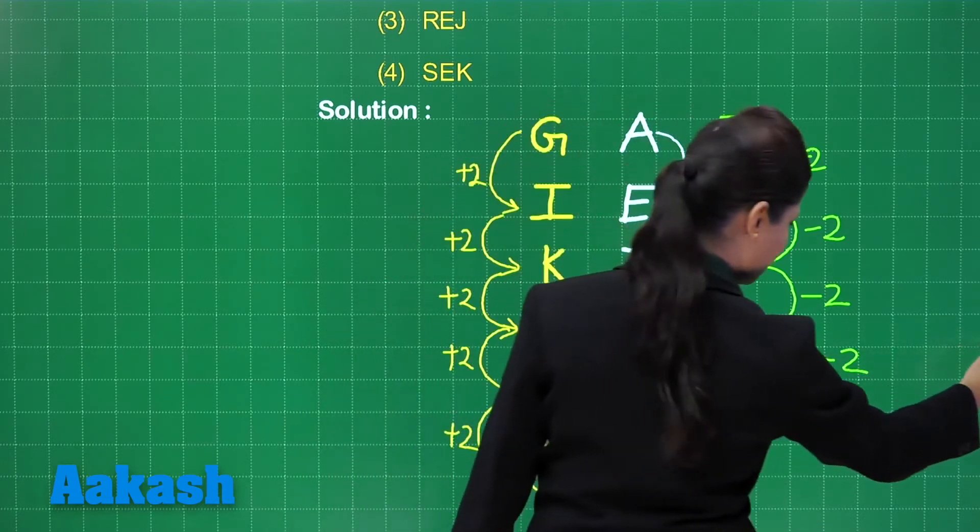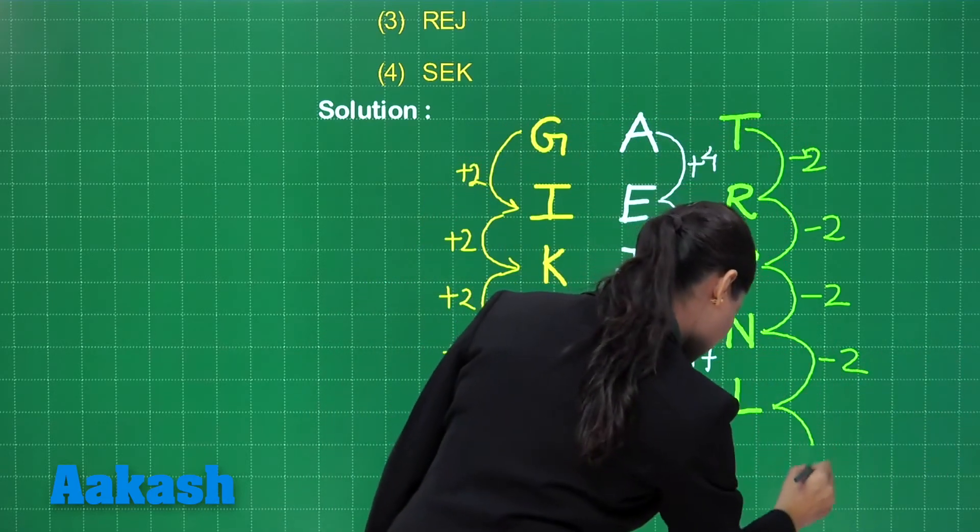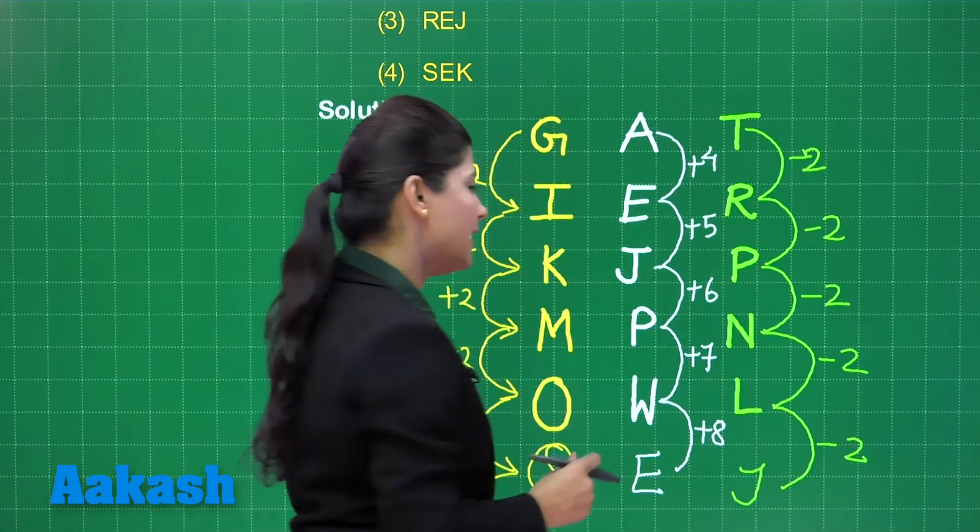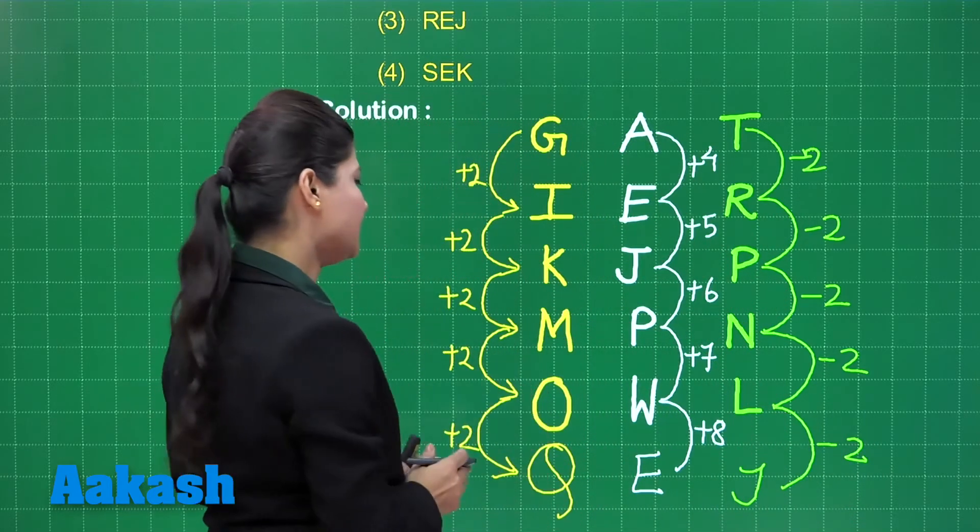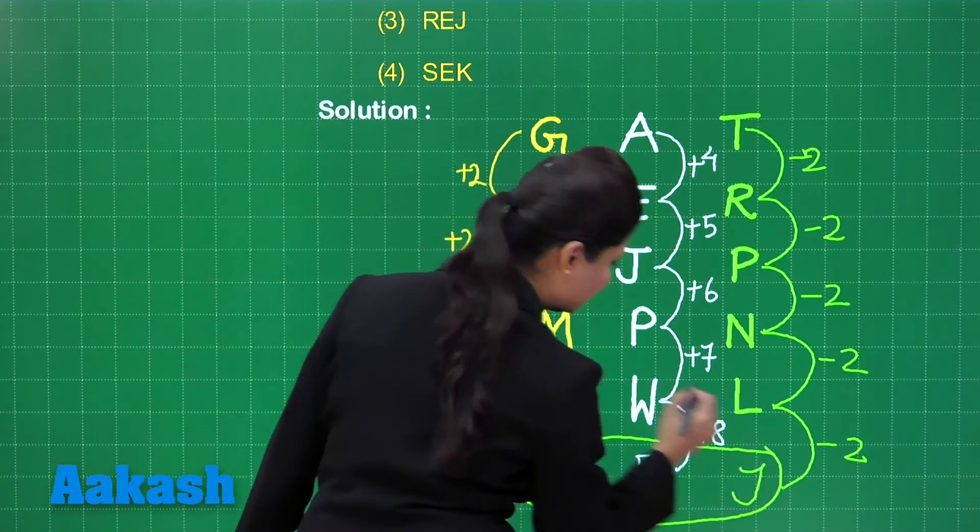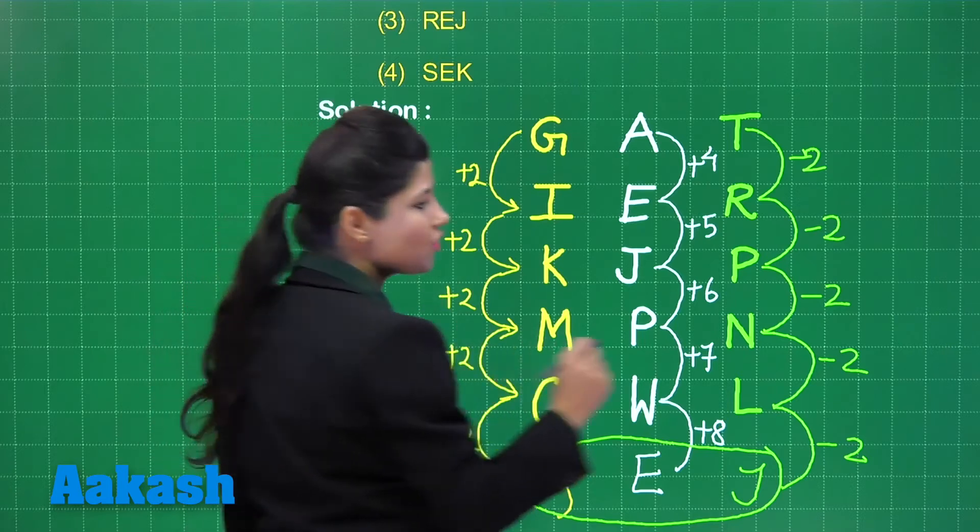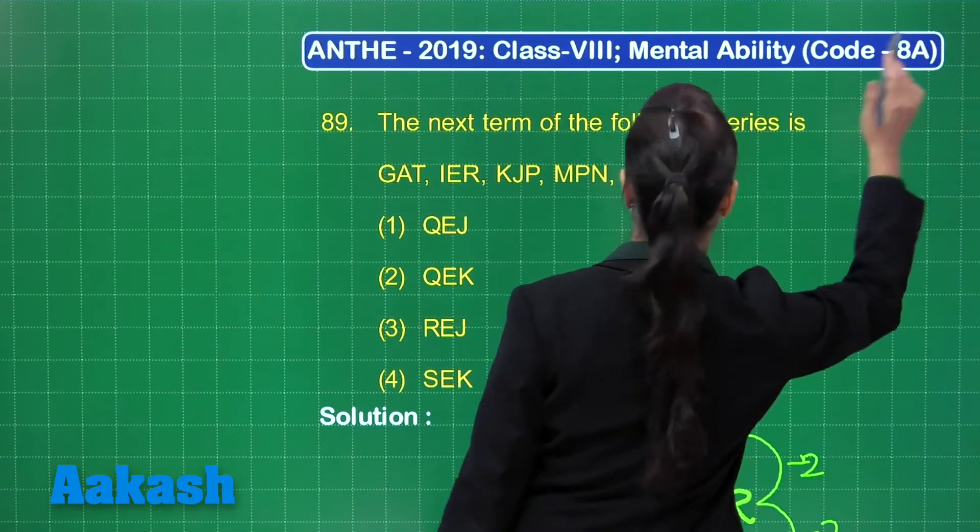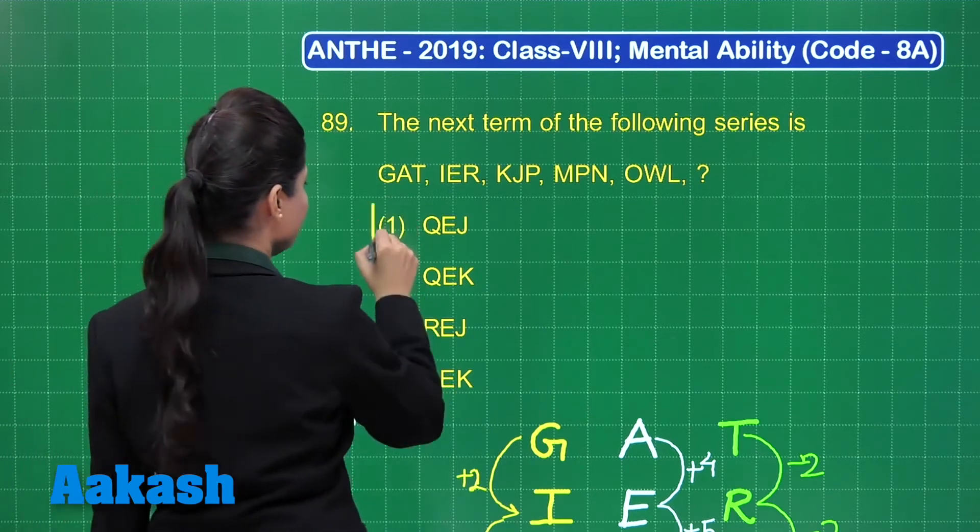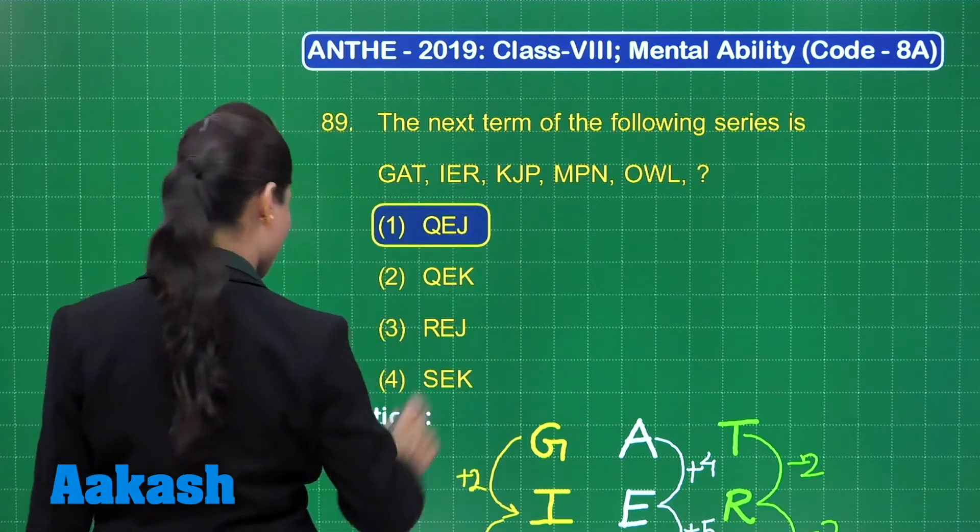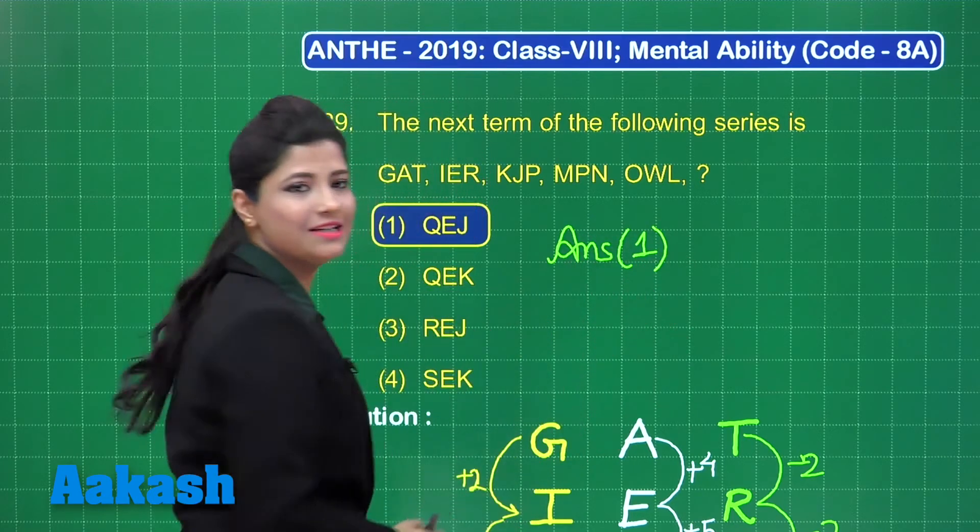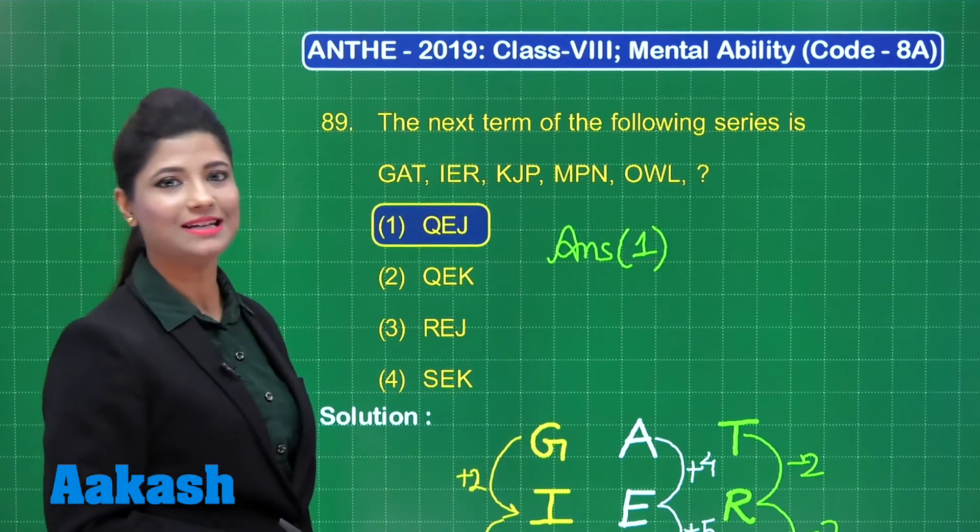And following the same pattern over here, we move to J. That is J, K, L. So we move as L, K, J. So the correct term following the same pattern should be Q, E, J. Let us observe the options provided to us. Here, QEJ is the first option available, which is the clear answer for this question. So you can definitely mark your answer as option 1. I hope it is clear to you.